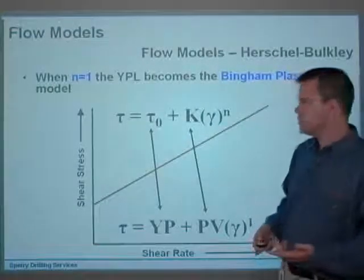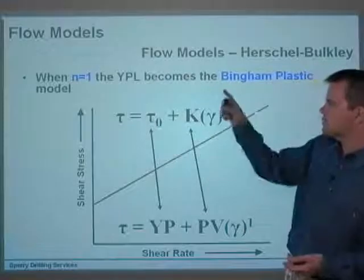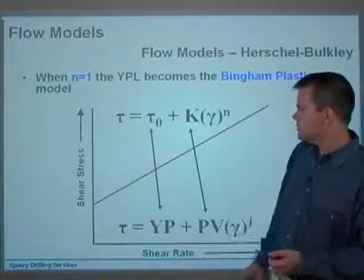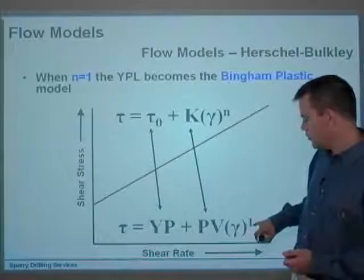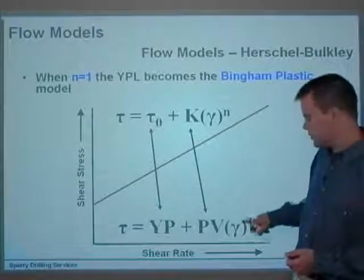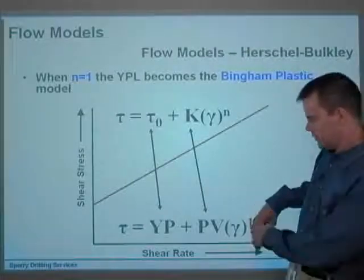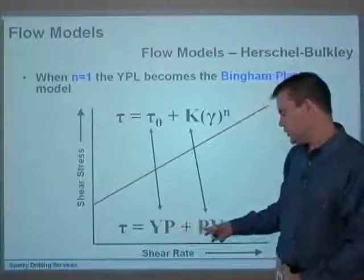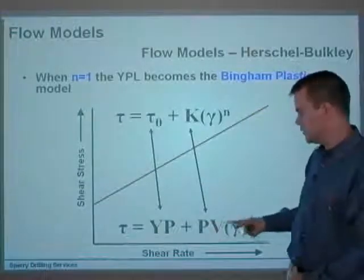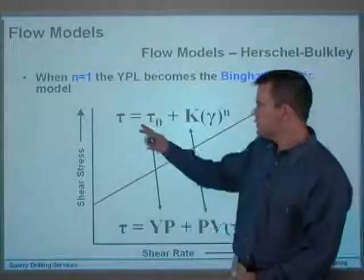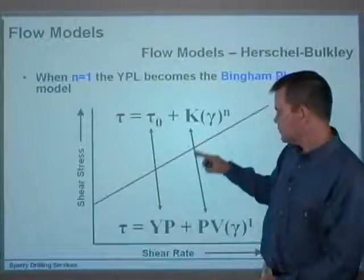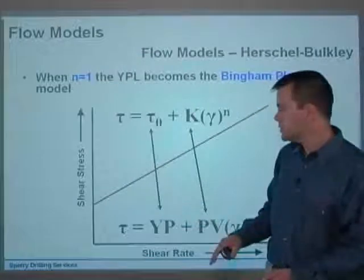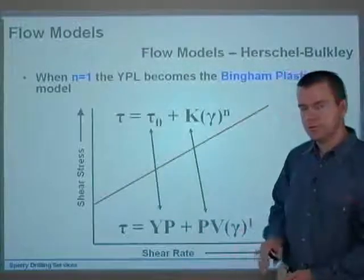To demonstrate this graphically: when n equals 1, the yield power law becomes the Bingham plastic model. Making n equal to 1, gamma to the power of 1 is just gamma, so you get tau equals YP plus PV times gamma — that is the Bingham plastic model. So this describes a Bingham plastic fluid; if you're pumping toothpaste, this would describe it.